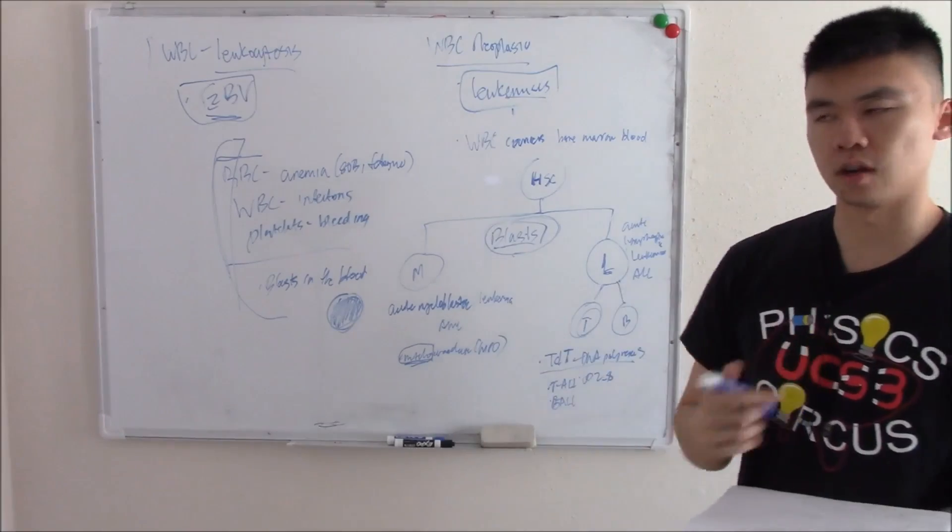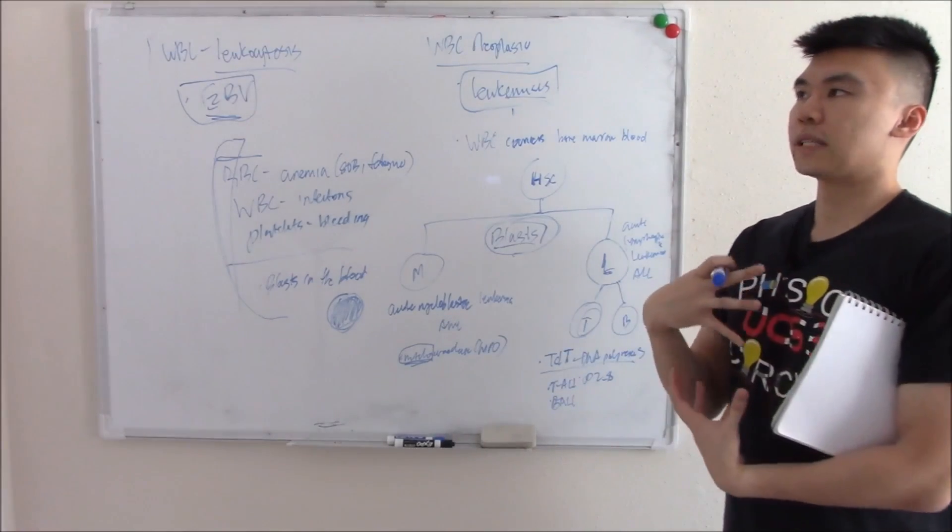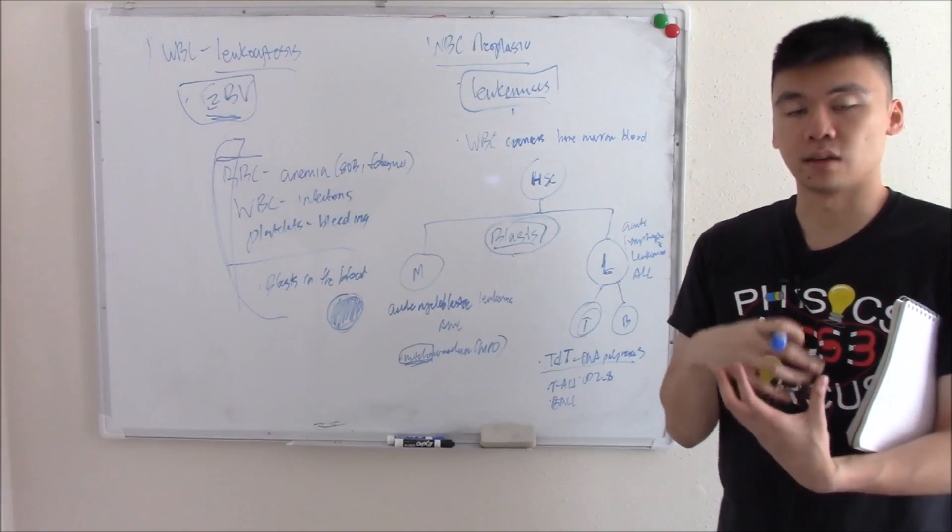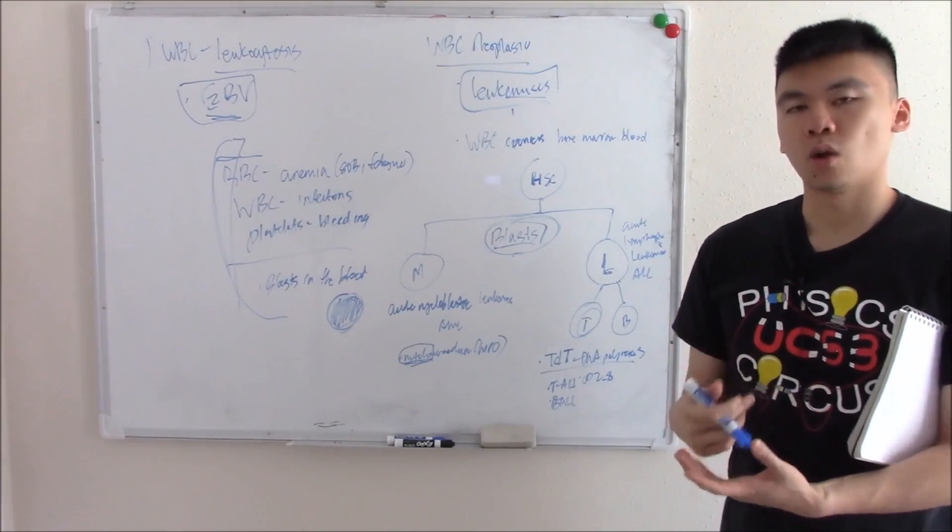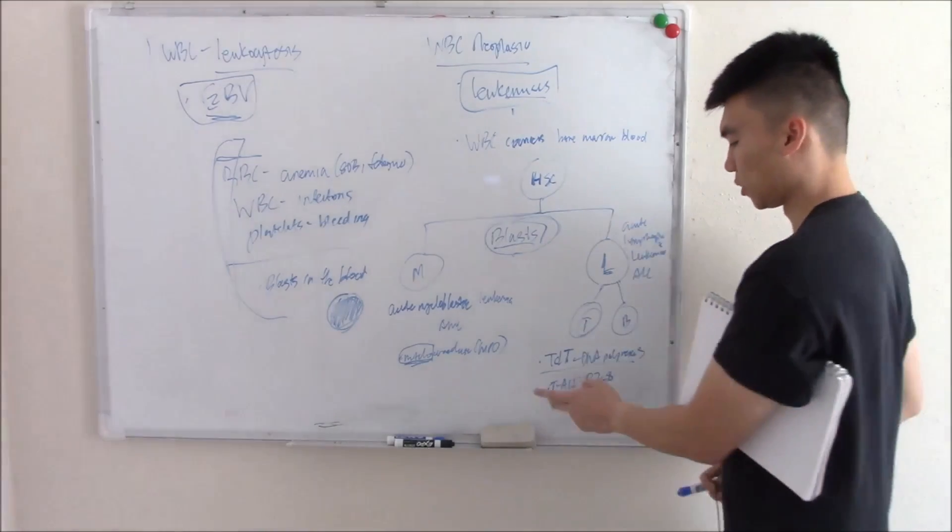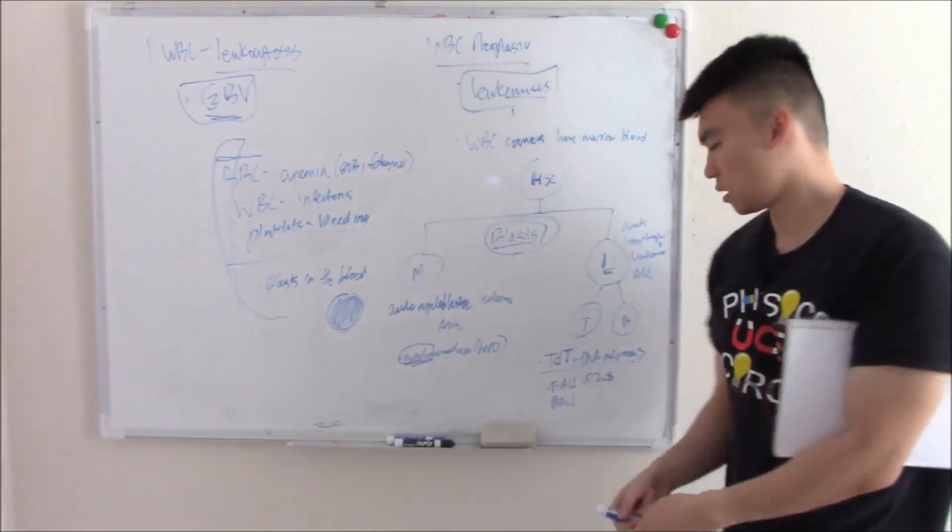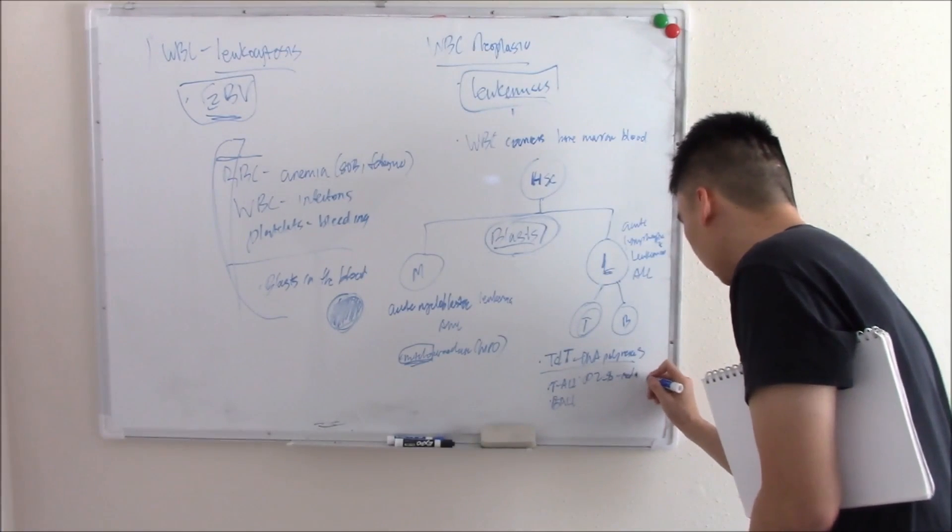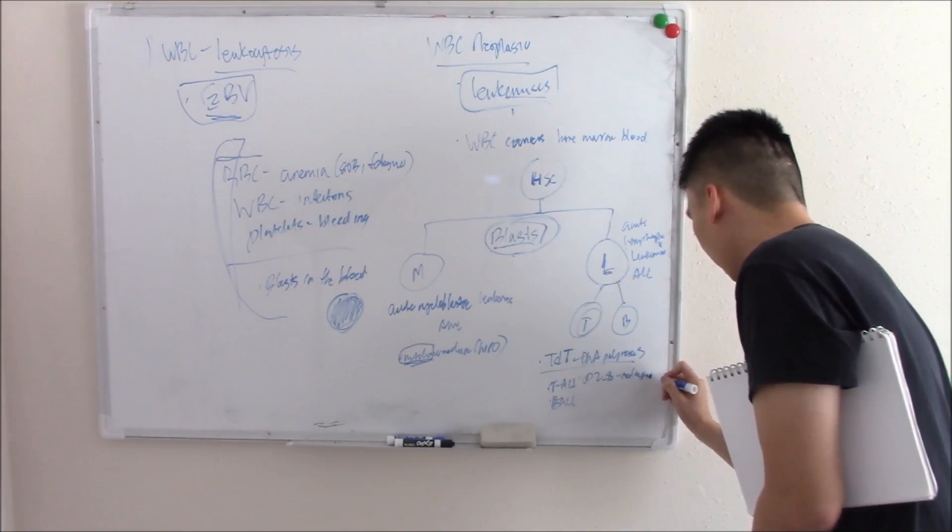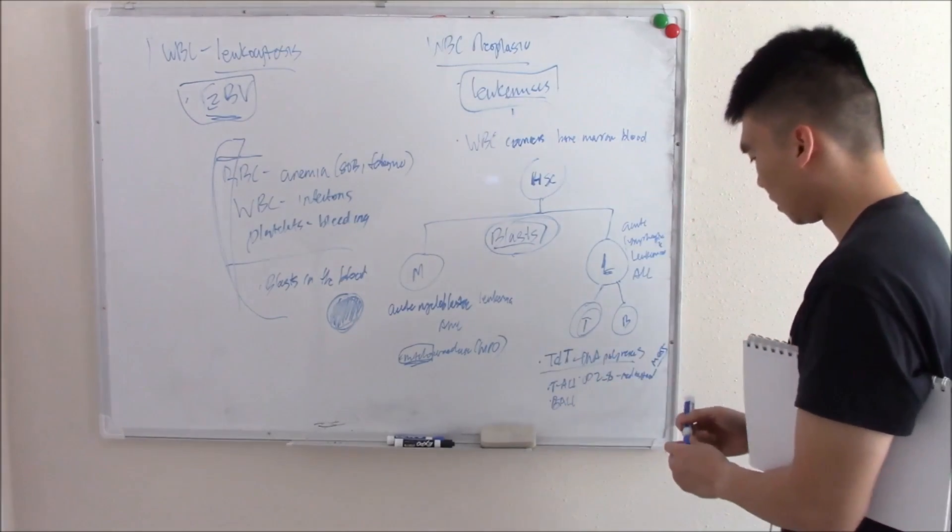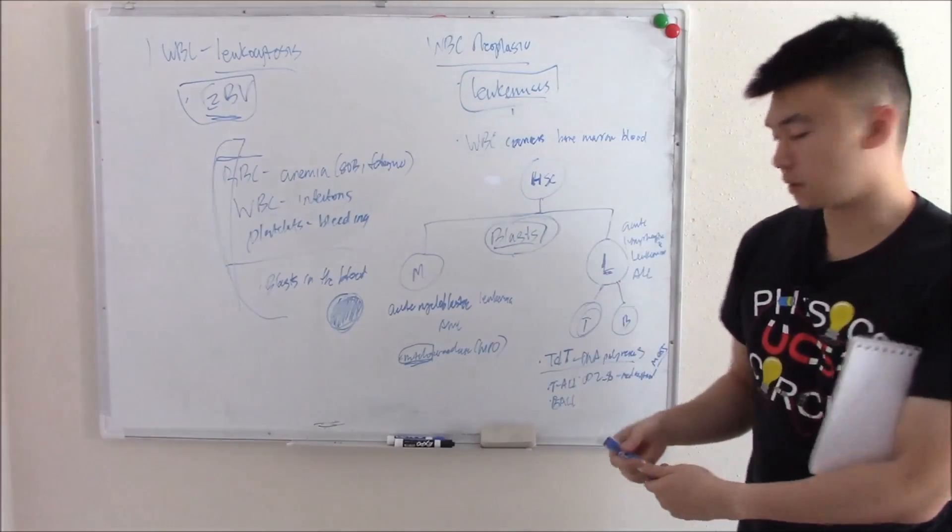A physical finding of T-ALL is that it presents with a mediastinal mass. That mediastinal mass is basically a thymic tumor. Why do they get a thymic tumor? Remember where T cells mature: in your thymus. So they get a mediastinal mass from all those T cells.